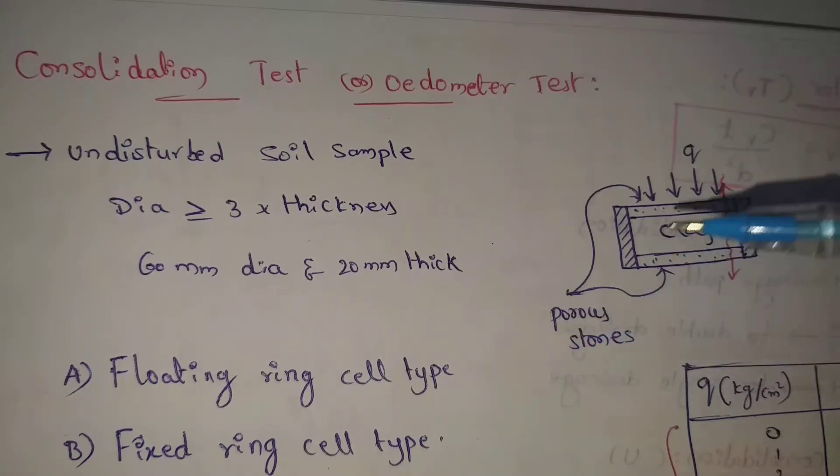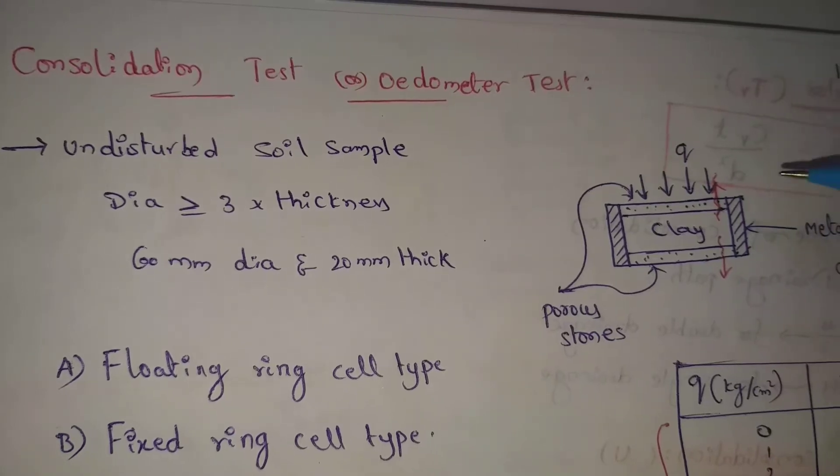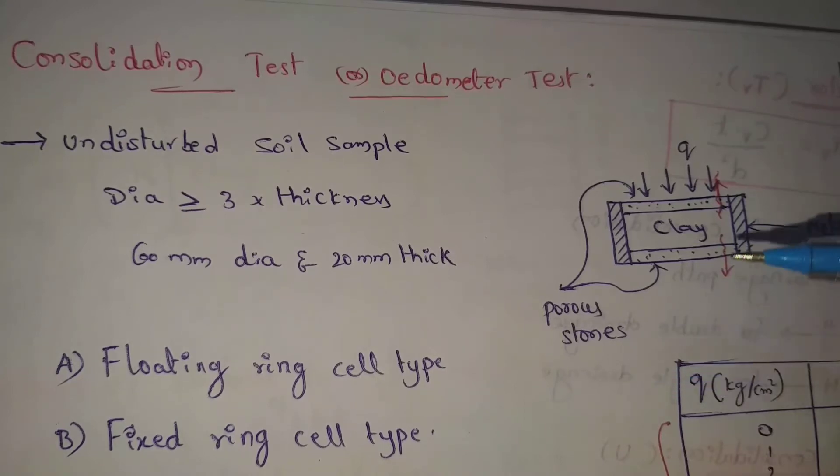In this first floating ring cell type, both top and bottom porous stones are free to move to compress the soil. In this method, floating ring cell type, this soil sample has porous stones on the top and bottom side.